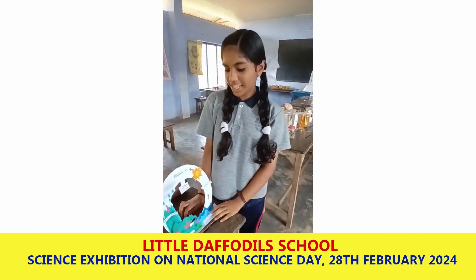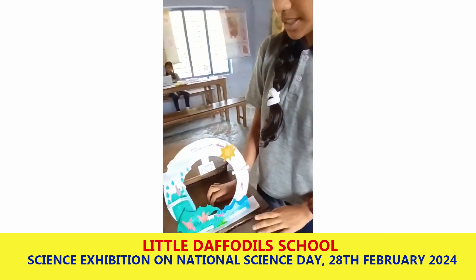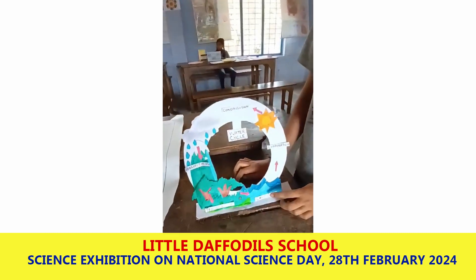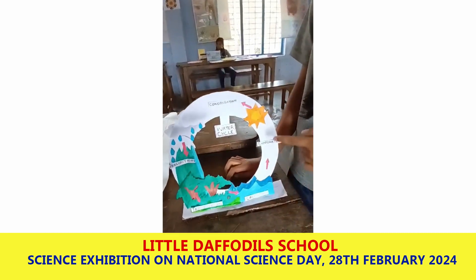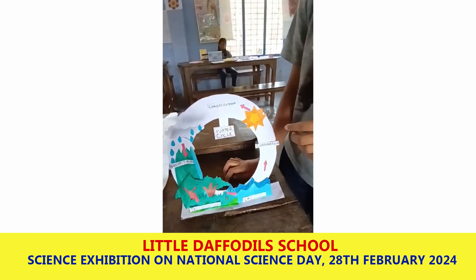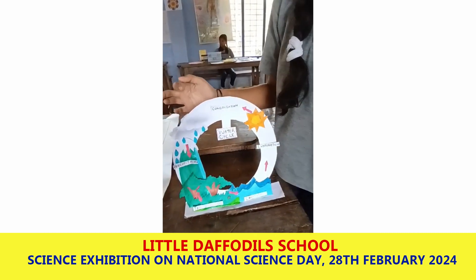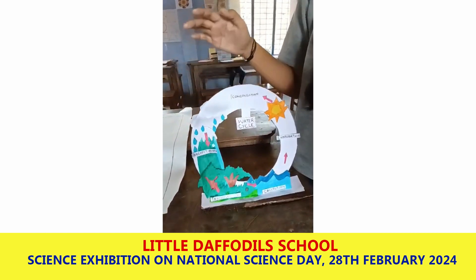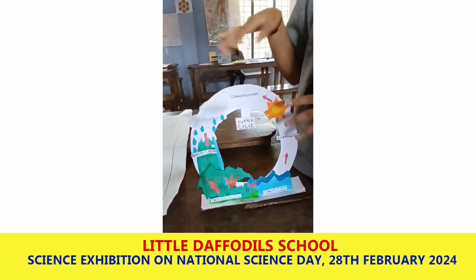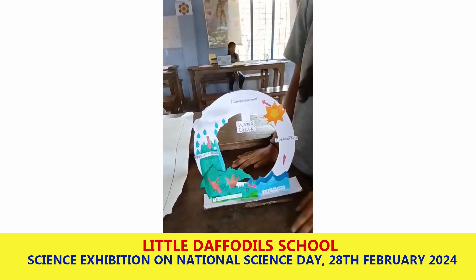Today I am going to show a model of the water cycle. The ocean is evaporated by the heat of the sun, then the water is turned into clouds and it drops some water, then it is continued by this process.